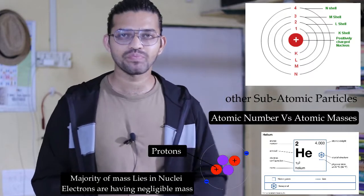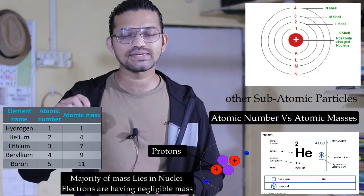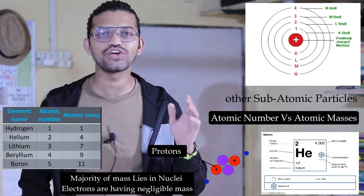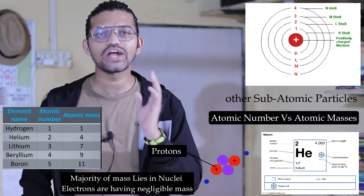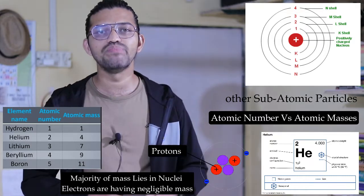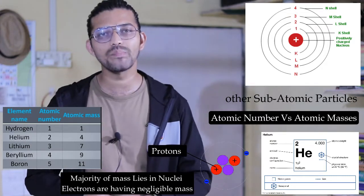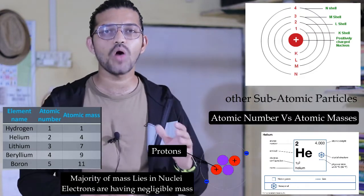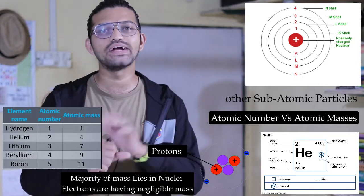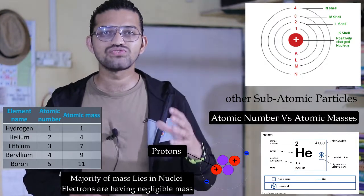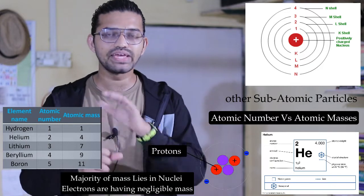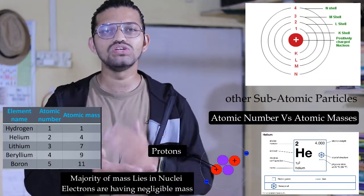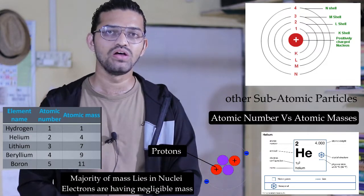In the case of helium, atomic number is 2 and atomic mass is 4 amu. For lithium, atomic number is 3 and atomic mass is 7 amu. For beryllium, atomic number is 4 and atomic mass is 9 amu. For boron, atomic number is 5 and atomic mass is 11 amu. From these atomic masses we can conclude that in the nucleus, apart from the protons, there is something else which has mass.